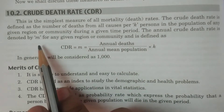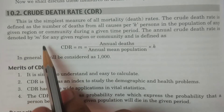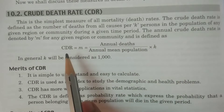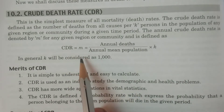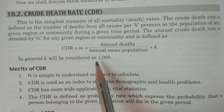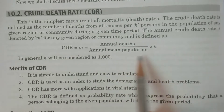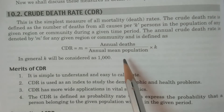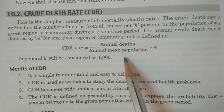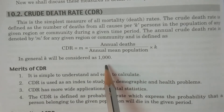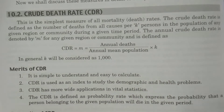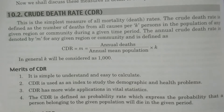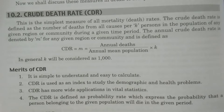The annual death rate is denoted by M. The standard notation of CDR is M. It is calculated as: CDR (M) equals annual deaths divided by annual mean population, multiplied by K. That is, how many deaths occurred in a specified time period, divided by the average mean population in the same period, multiplied by K (usually 1000). Simply put, number of deaths divided by total population in a specific time period is the crude death rate.